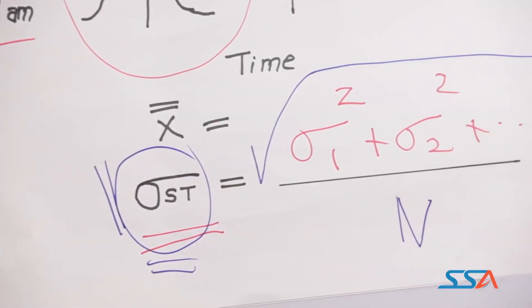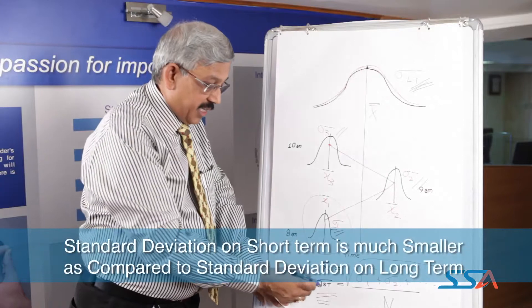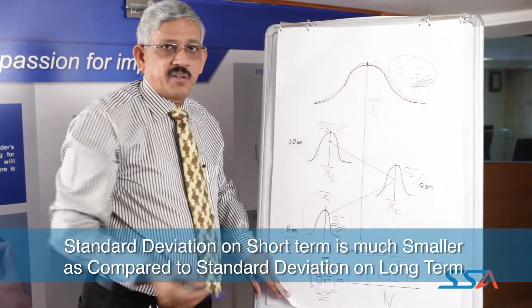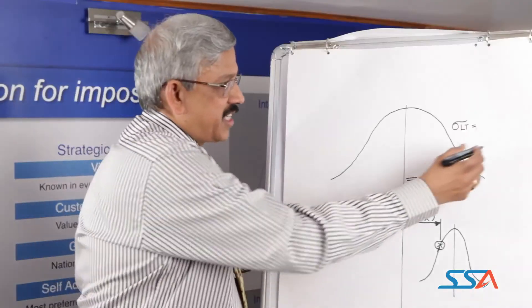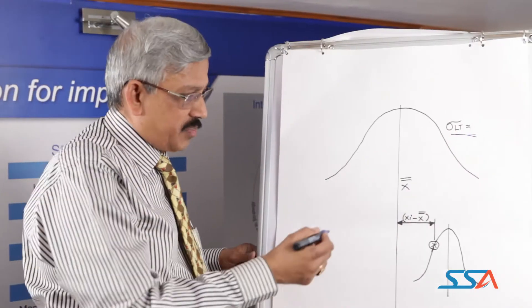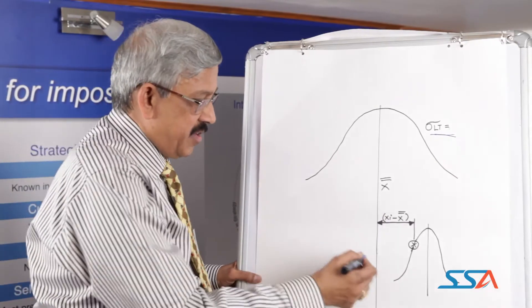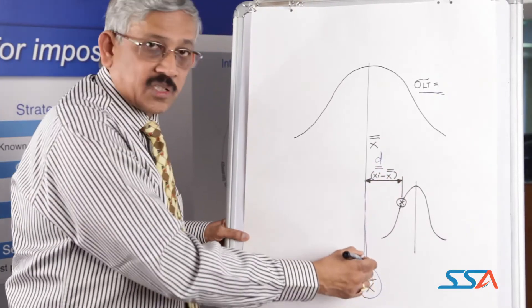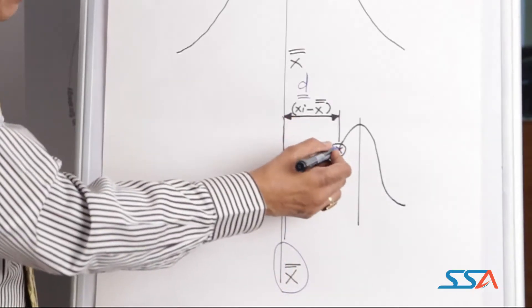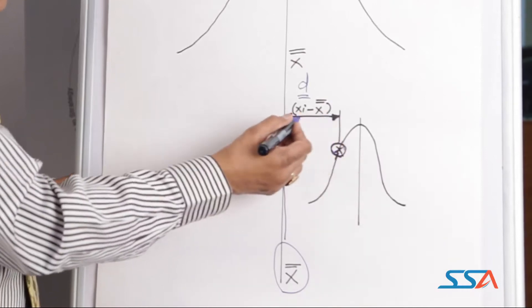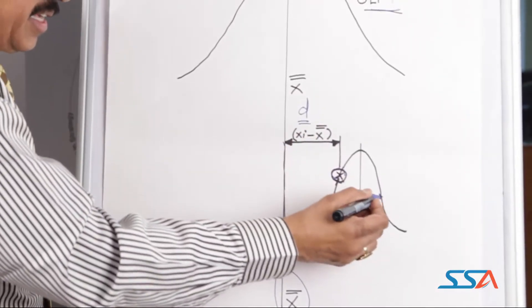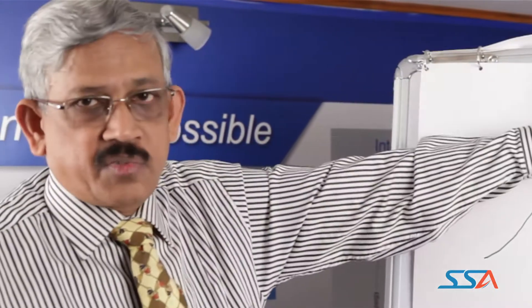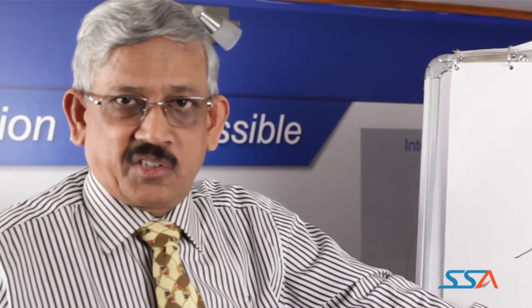The short-term and long-term standard deviations thus calculated will show that the short-term standard deviation is much smaller compared to the long-term standard deviation. The reason we square the standard deviations is that standard deviation is not additive — only variance is additive — which is why we square them and then take the square root of the whole sum. The long-term standard deviation is much bigger because we are measuring deviation with respect to the mean of the entire process.